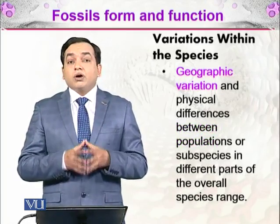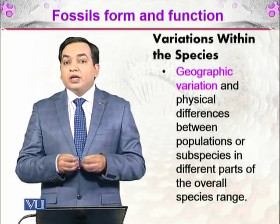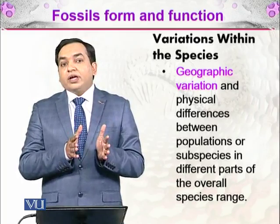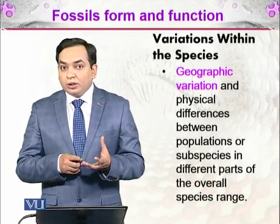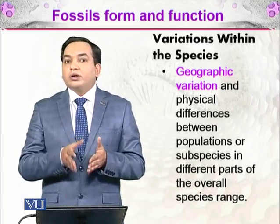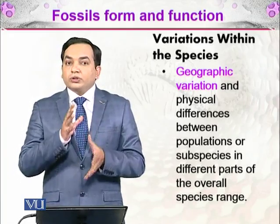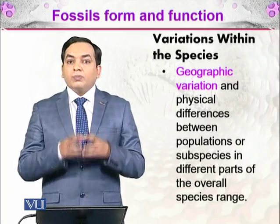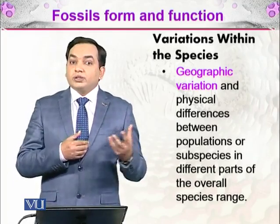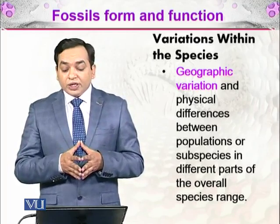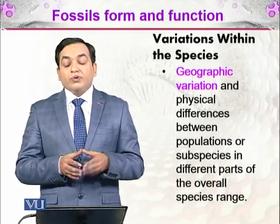What causes variation within species? Suppose an ancient organism A was living in area C, and that area was divided by a geographical barrier — a river that started flowing, or mountains formed due to plate collision. Due to that geographical barrier, the population splits into two parts, each developing into different species through speciation. Geographical variations and physical differences between populations and subspecies across different parts of the overall species range result in variation within the species.